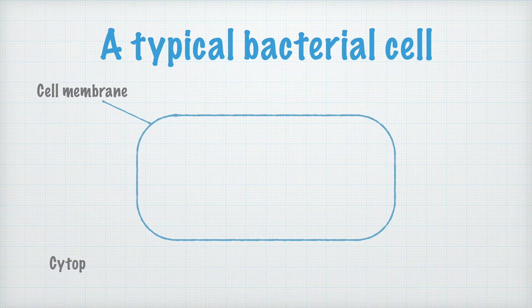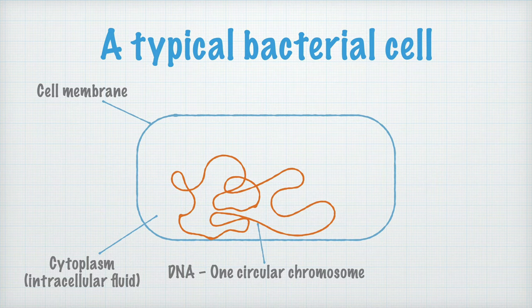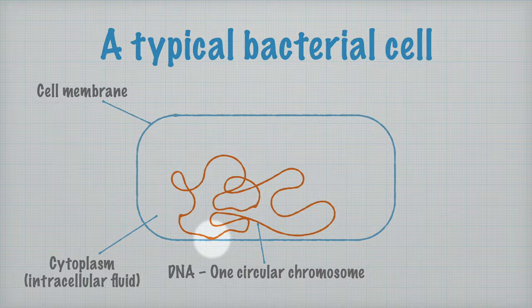The cytoplasm is the intracellular fluid in which everything else in the cell floats around. And one of the things is the cell's DNA — its genetic material. In bacteria, there's only one chromosome, and it's circular, as I show here. Quite often, it's also attached to the cell membrane.